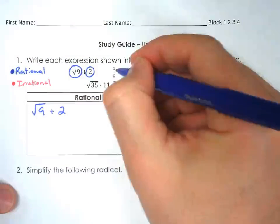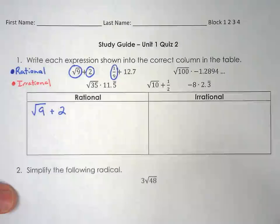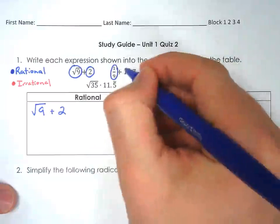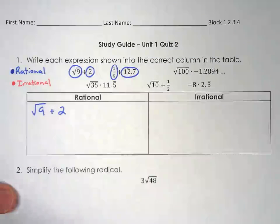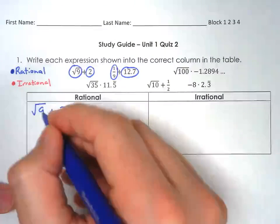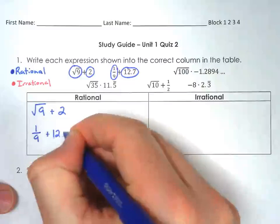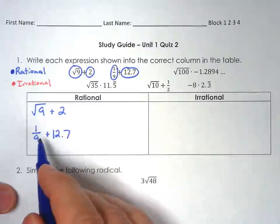Let's take a look at the next one. 1 over 9 is a fraction. So that is a rational number. And then you look at 12.7. 12.7 is a terminating decimal. It's a terminating decimal. A terminating decimal is also considered to be rational. So 1 over 9 plus 12.7. Again, a rational and a rational make a rational answer.